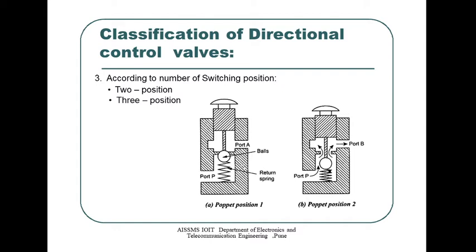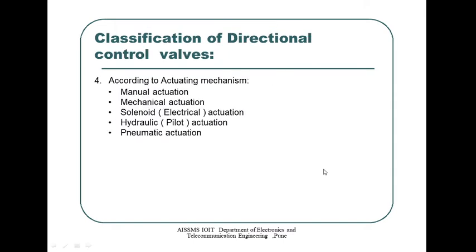Classification based on the number of switching positions: two-position valves and three-position valves. The figure shows an example of a poppet valve having two switching positions. Classification of directional control valves based on the actuating mechanisms: manual actuation, mechanical actuation, solenoid electrical actuation, hydraulic pilot actuation, and pneumatic actuation.